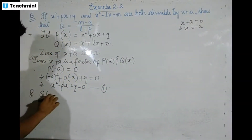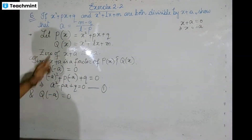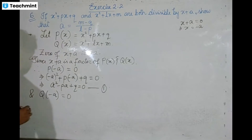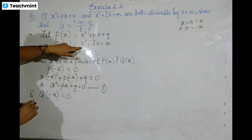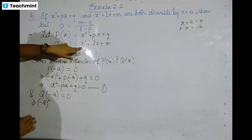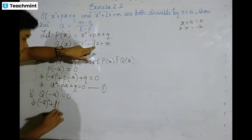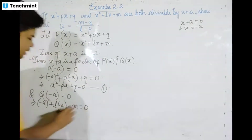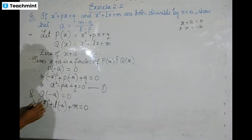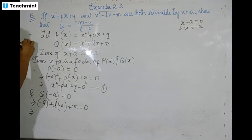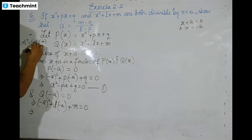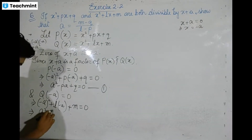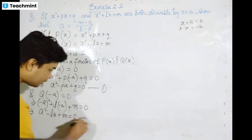And q of minus a is also zero, since x plus a is also a factor of x squared plus lx plus m. Substituting minus a: minus a whole squared plus l times minus a plus m equals zero. So a squared minus la plus m is equal to zero. Call this equation number 2.